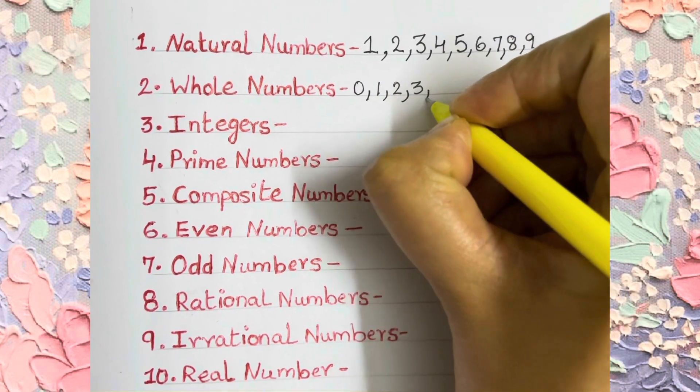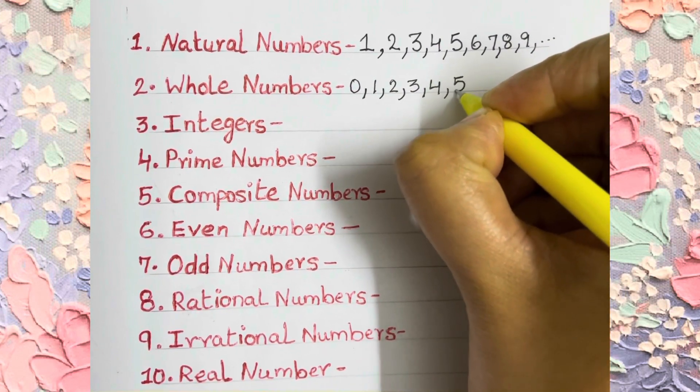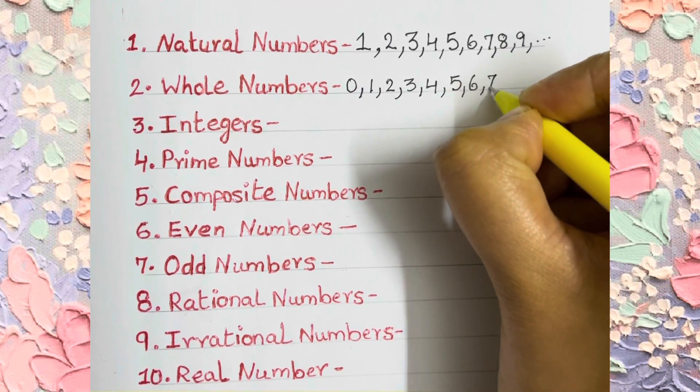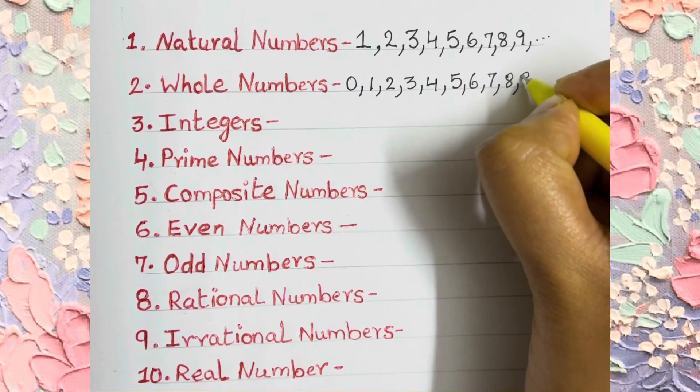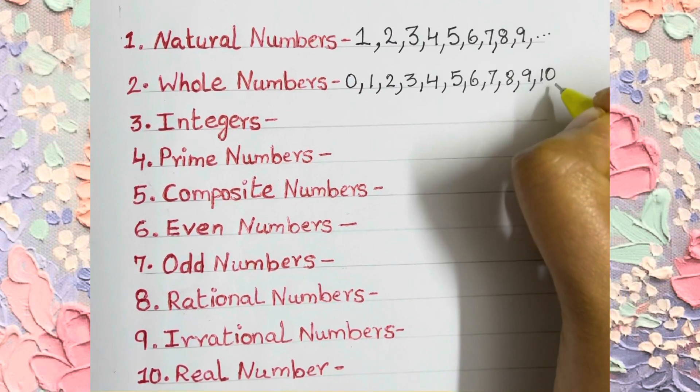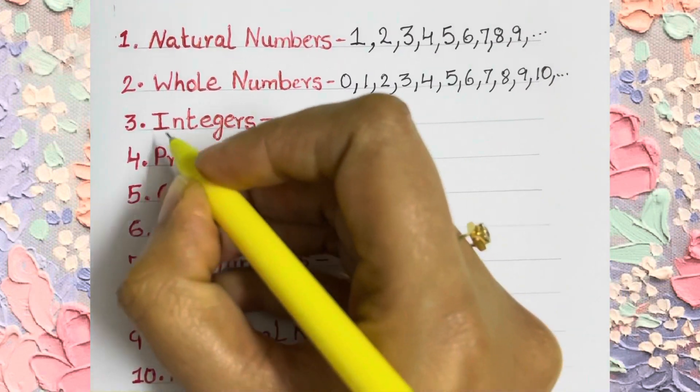As soon as the 0 comes, the number becomes complete. Like it is attached to the numbers after 9, like 10, and so on. That's why they are called whole numbers, as it becomes complete.